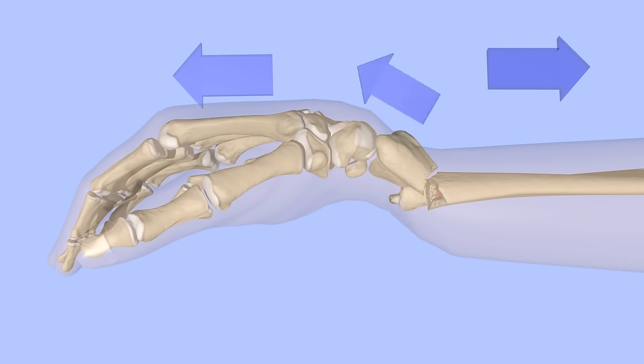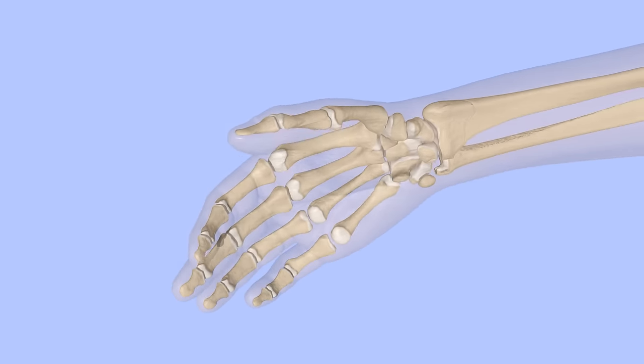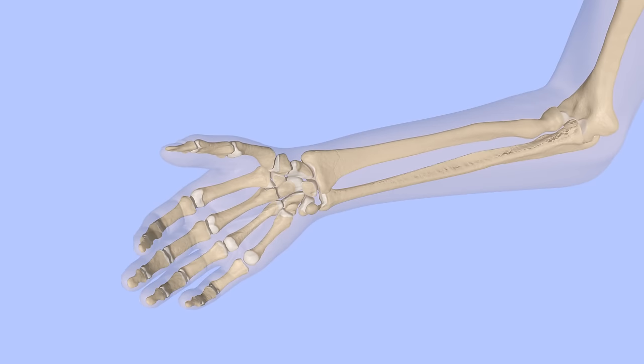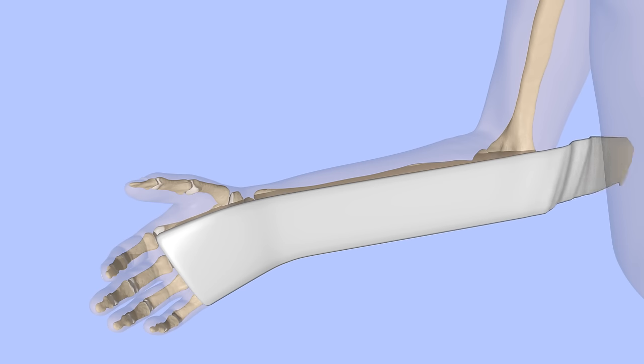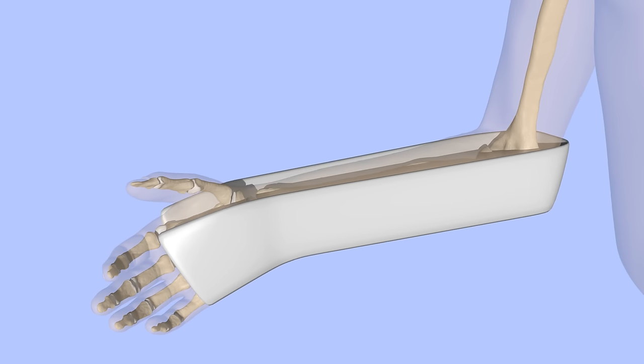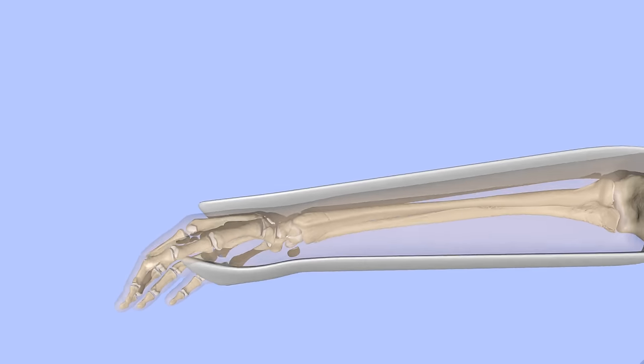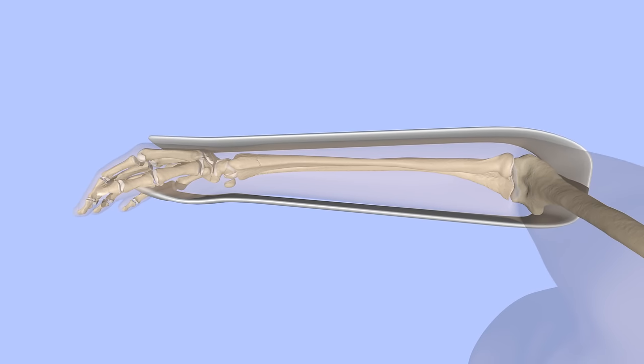Once the fracture is well aligned, a cast or splint must be applied to hold it in alignment. A sugar tong splint is a popular choice because it can be molded to hold the fracture in alignment, prevents pronation and supination of the forearm, and allows for swelling.